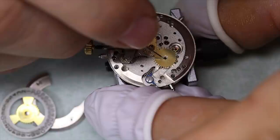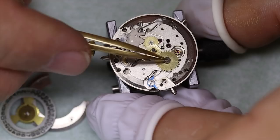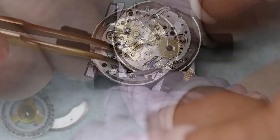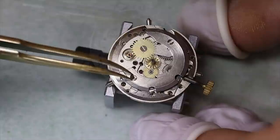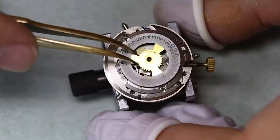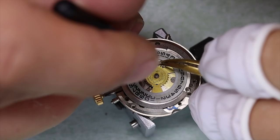So confident that the movement is running well, we can put in the date complication. It's a very simple solution, but anything other than timekeeping is a complication. It's got a pretty cool date disc, this movement, reminiscent of the IWC 85 series. And the last thing we're gonna do is put a little bit of D5 or similar on the jumper, and then we're flicking it a few times back and forth.